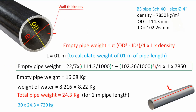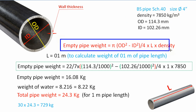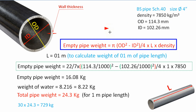Now we will calculate the empty pipe weight. The pipe outside diameter we already selected and inside diameter we have also calculated. The density for carbon steel is equal to 7850 kg/m³. To calculate the empty pipe weight, we use this formula: empty pipe weight equal to pi × (outside diameter² minus inside diameter²) / 4 × pipe length × pipe density.